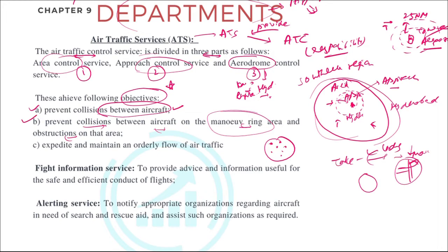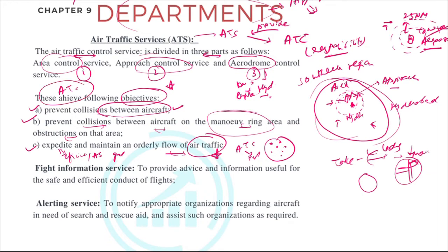Next is to expedite and maintain the orderly flow of traffic. There are so many aircraft, so they have to control the traffic — that is what 'air traffic control' means. They have to ensure no collisions happen in the maneuvering area and maintain a systematic orderly flow of air traffic in the service area, whether it be area, approach, or aerodrome.